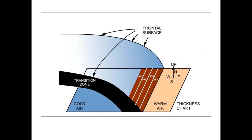Here's a graphic showing what a frontal surface looks like on a thickness chart. If you go towards the right on this chart, thicknesses increase. The hypsometric equation basically states that higher thicknesses in the atmosphere mean warmer temperatures — they're directly proportional. The lower the thickness values, the colder the temperatures. When the atmosphere is warm it wants to expand, so thickness values increase. When the atmosphere is cold, it's much more dense and the upper level heights decrease with colder air masses.